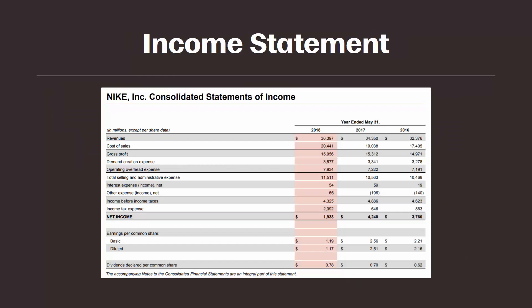Before we close this video on the income statement, let's look at a company's income statement included in their 10K. We should be familiar with most of the items on this income statement. This is Nike's income statement. The only thing you might be unfamiliar with is the line item titled demand creation expense. This is a line item unique to Nike. I did the same thing as we did with Netflix's balance sheet and looked it up — it's just Nike's fancy way of saying advertising expense.